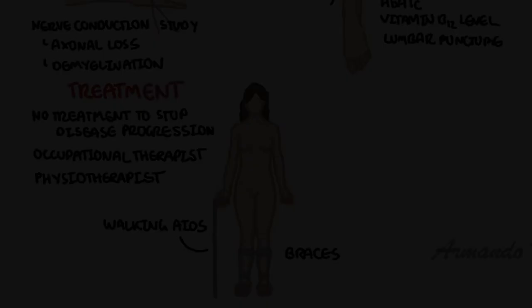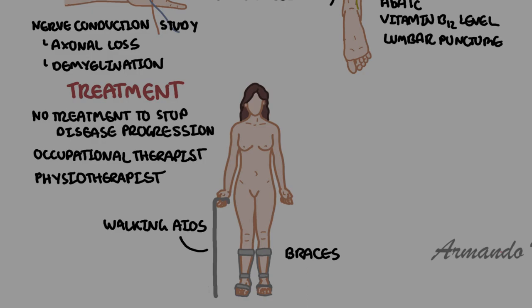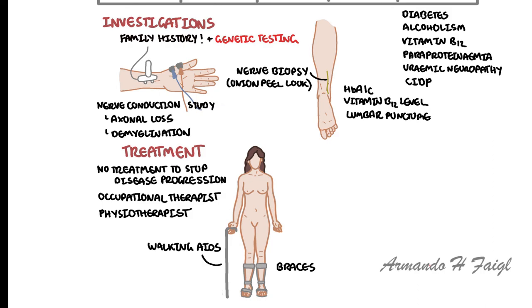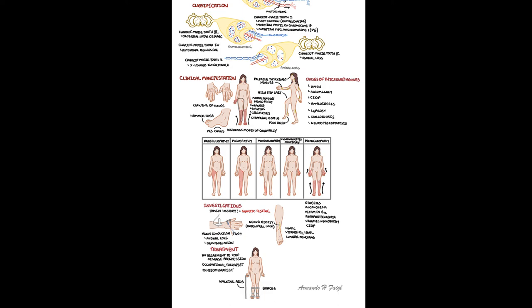In summary, Charcot-Marie-Tooth disease is a hereditary sensory and motor polyneuropathy that causes progressive weakness, sensory loss, and skeletal deformities involving the foot and the hands. There is no treatment to stop progression of the disease, and so treatment focuses on supportive care.